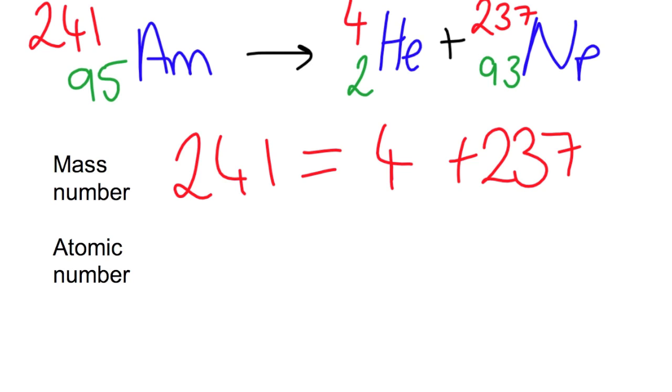We then go on to look at the atomic number. So for americium it is 95, which is equal to the 2 from the alpha particle plus 93 from neptunium.